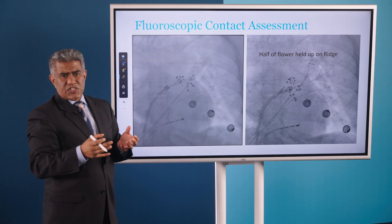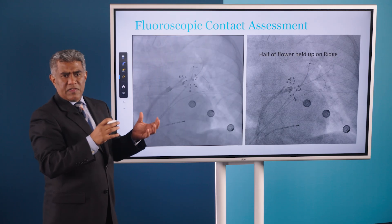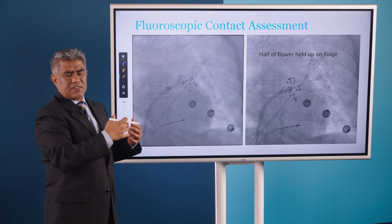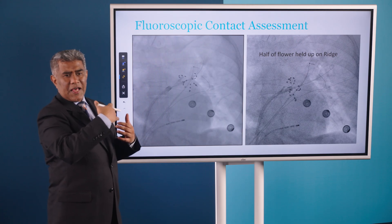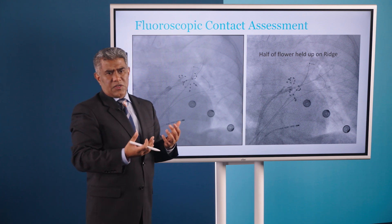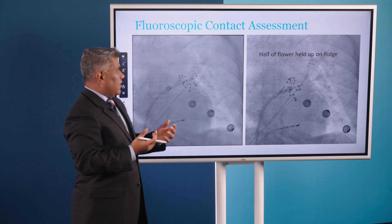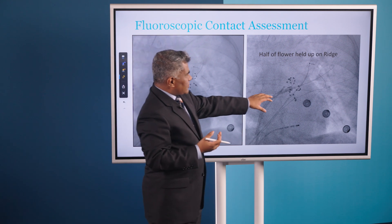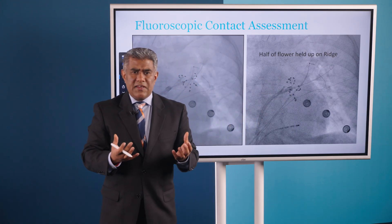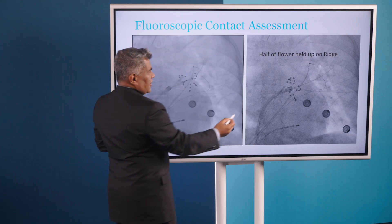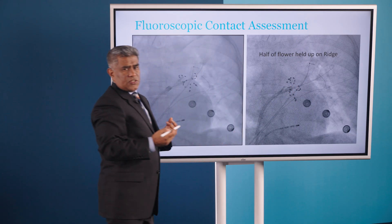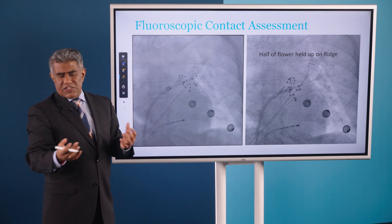This next slide shows a video loop where we are moving the catheter, and what you see is contact on some splines while other splines prolapse into the vein, suggesting that's not good contact. That's the role of using fluoroscopy for certain designs. On the other hand, if you just look at a still image, you have no idea what contact is going to be. In this particular case, the left veins are out here and the flower is being held up by the ridge, suggesting that you'll get a very weak lesion.